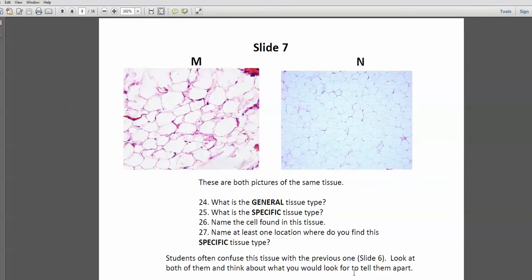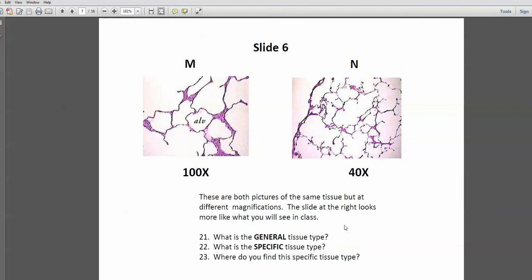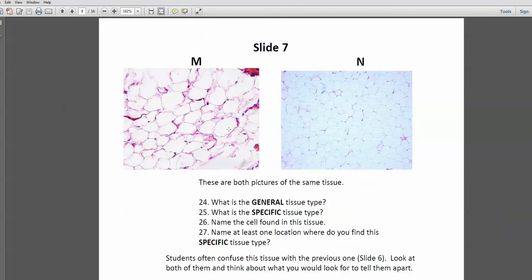Slide number 7 is often confused with slide number 6. Slide number 7, each of these spaces, or what looks like spaces, is actually a cell. These cells are filled to the brim with fat. And what cell is filled with fat? None other than adipose. Or adipocytes is the cell. Adipose tissue is the specific type of tissue. And adipose tissue, of course, is connective tissue. So the general tissue type is connective. Specific tissue type is adipose.